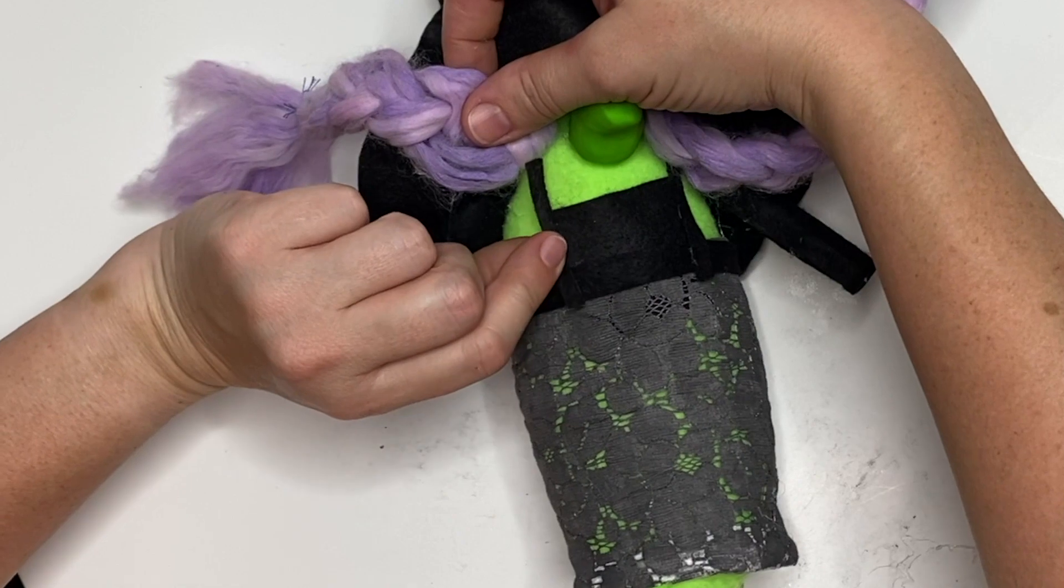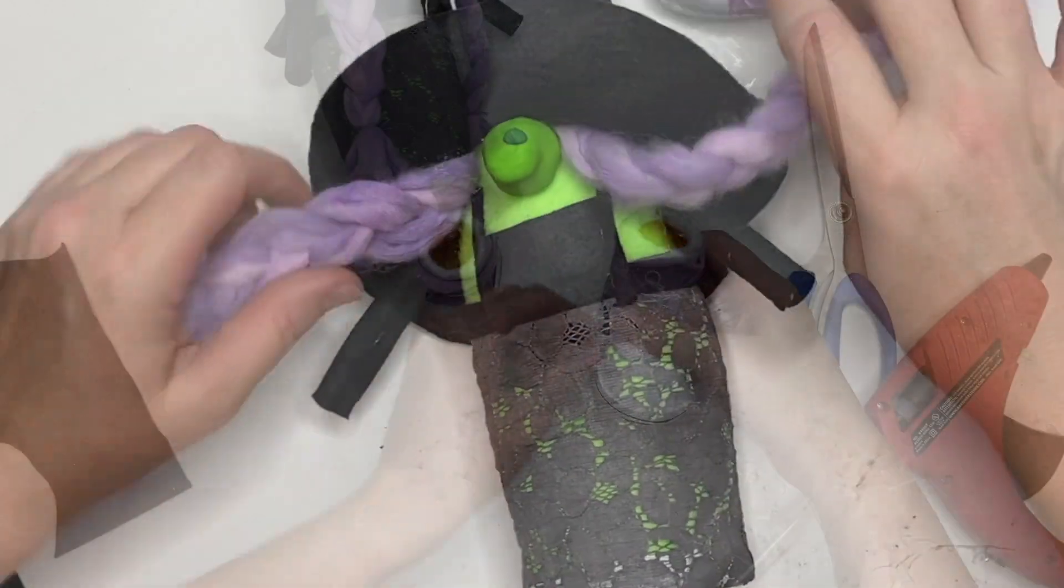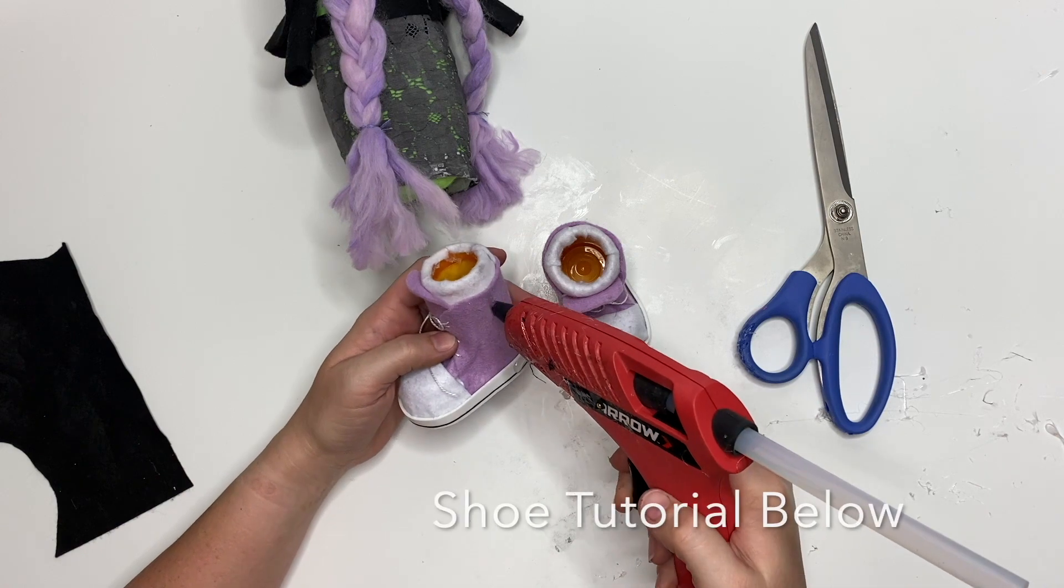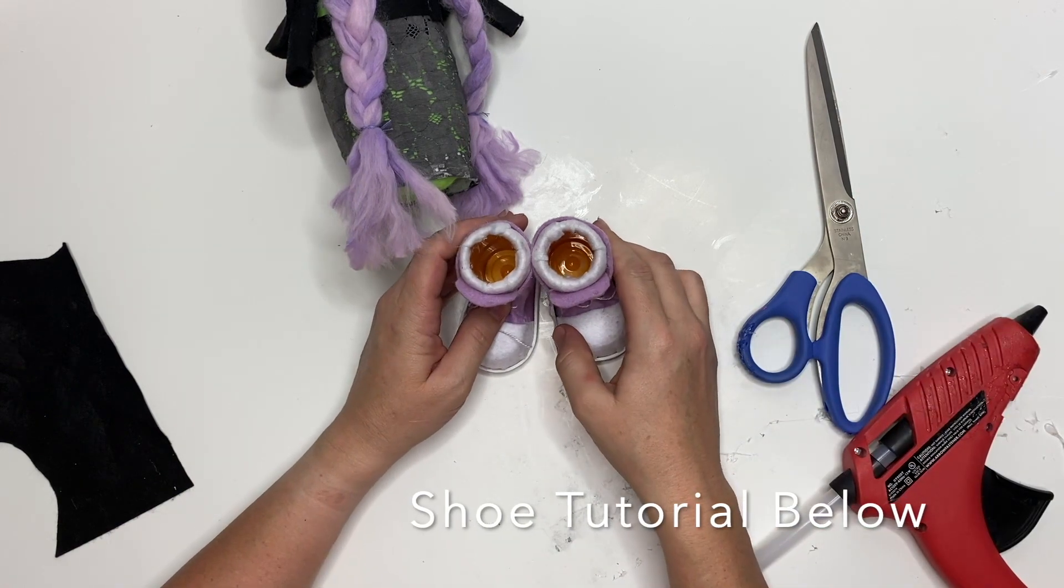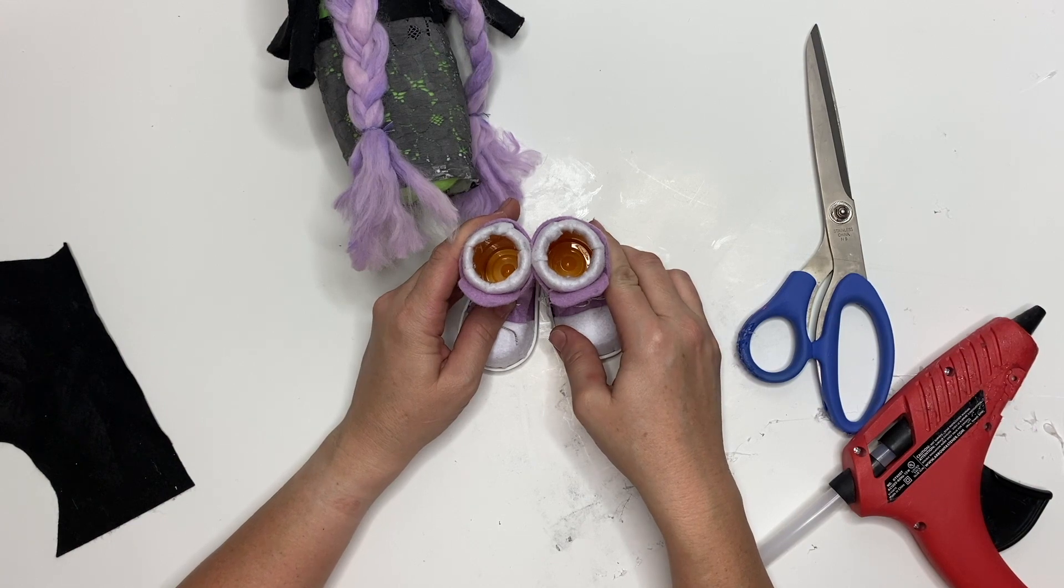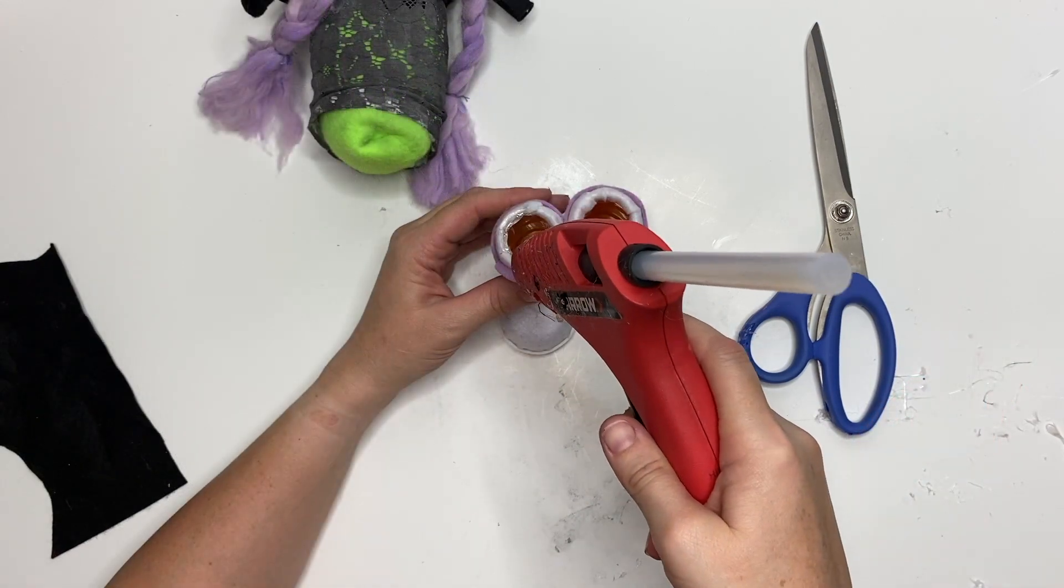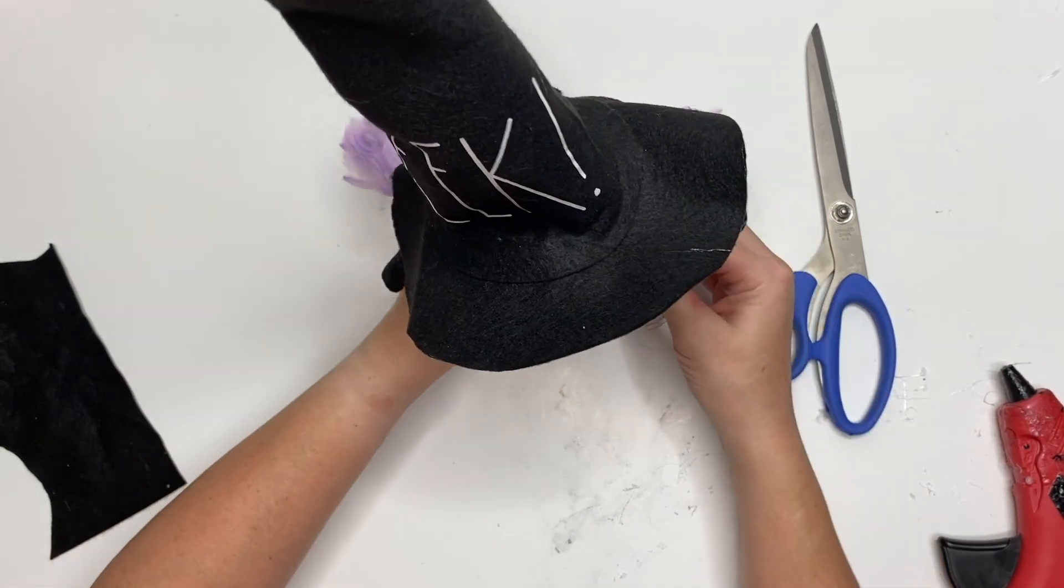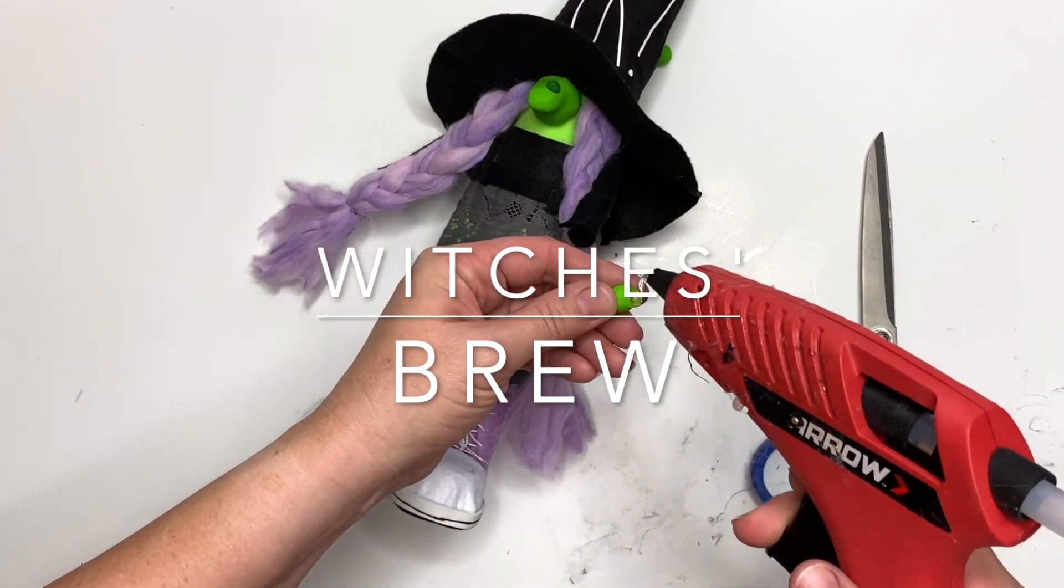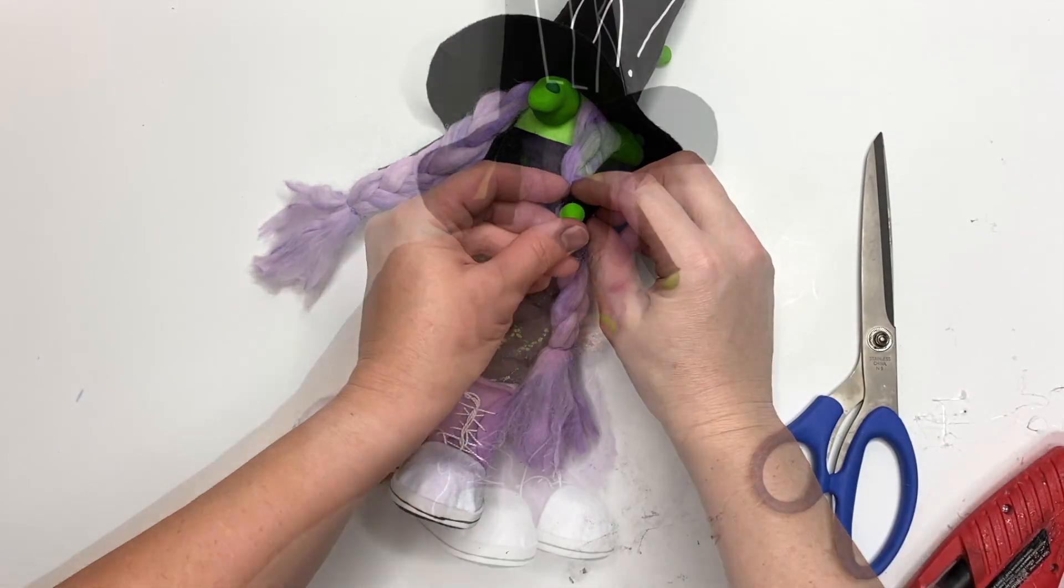Now these are the super cool kicks that our witch is wearing—I get really excited about gnome shoes. I will put that pattern link down below, but wait for the video—it's super cool. We are going to add a generous portion of hot glue there and we're gonna set our lady on top.